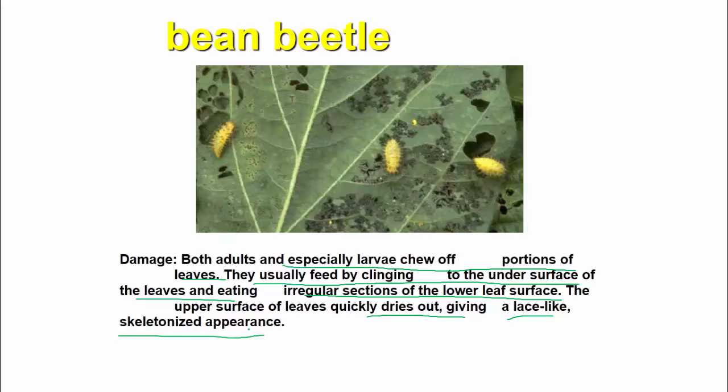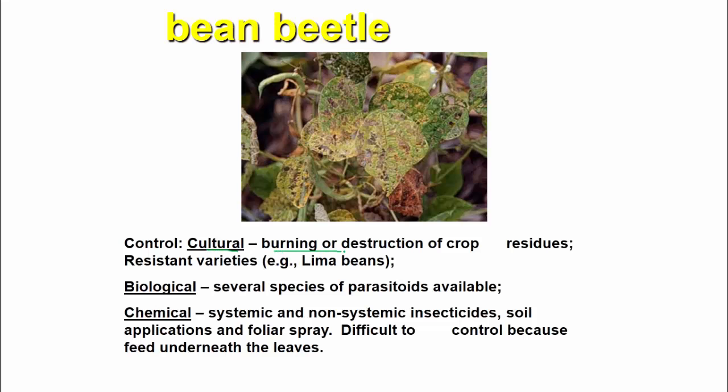For control: cultural control includes burning or destruction of crop residues and growing resistance varieties such as lima beans. Biological control uses several species of parasitoids. Chemical control includes both systemic and non-systemic insecticides, soil applications, and foliar sprays.